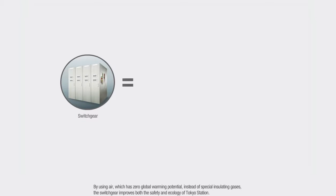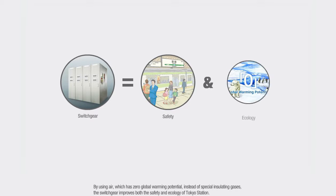By using air, which has zero global warming potential instead of special insulating gases, the switch gear improves both the safety and ecology of Tokyo Station.